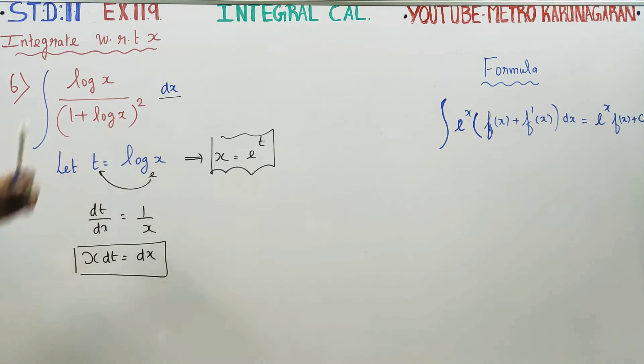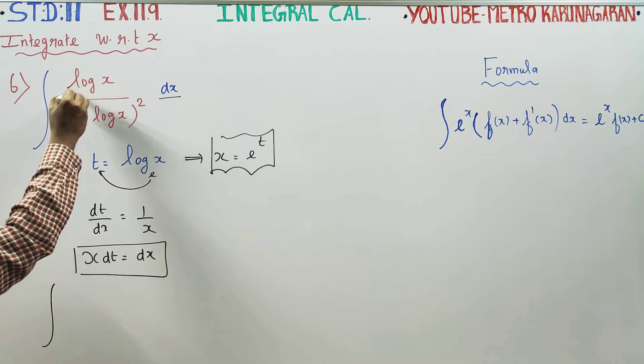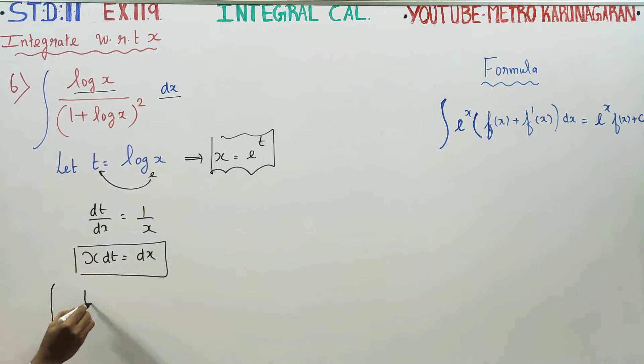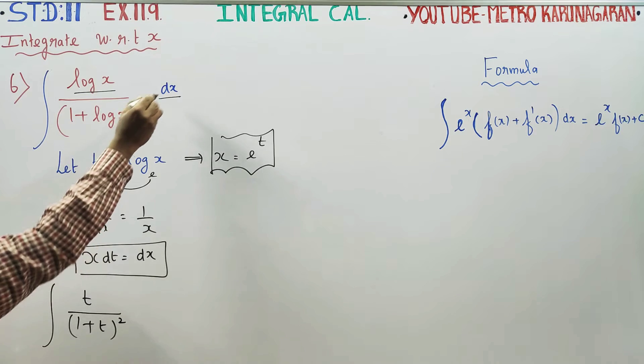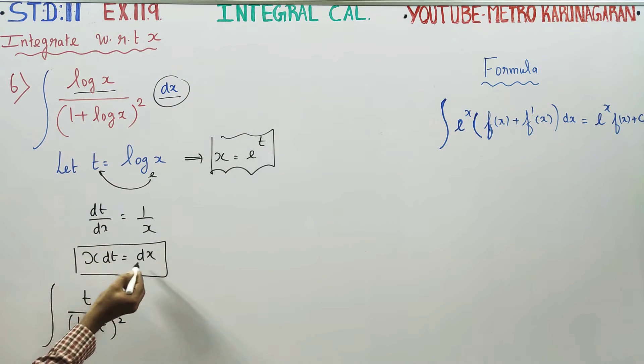Fine. We will enter into the sum. Integration log x by 1 plus log x whole square, dx. That's log x by 1 plus log x whole square, x into dt.